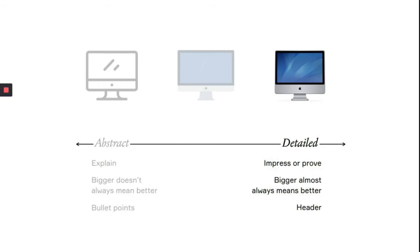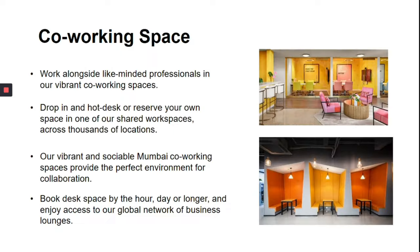We use photographs when we want to impress the audience or when we want to prove something. With photographs, bigger almost always means better, and we illustrate headers with photographs and not bullet points. So when you are searching for images online, please use words that are present in the header. For example, this is a slide about co-working spaces and the images are a direct representation of what we are trying to communicate.